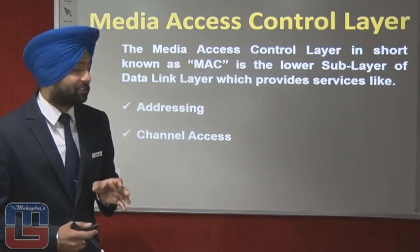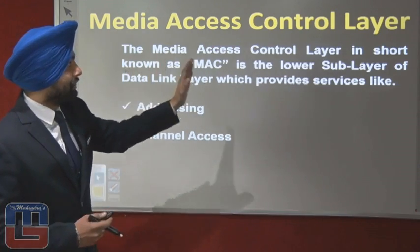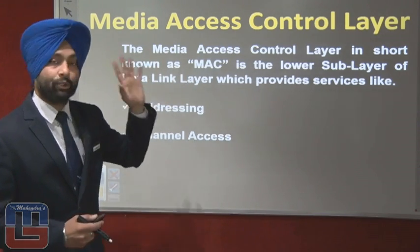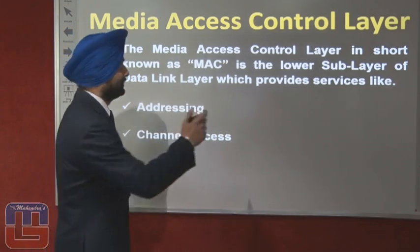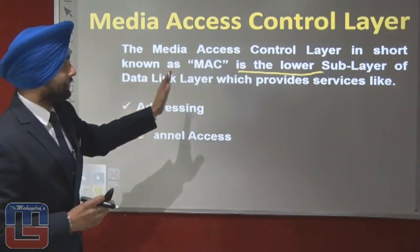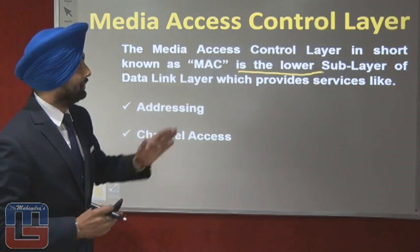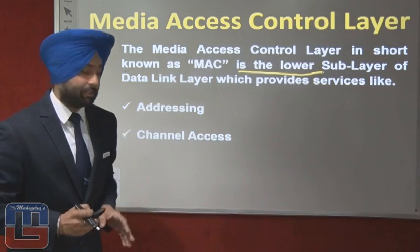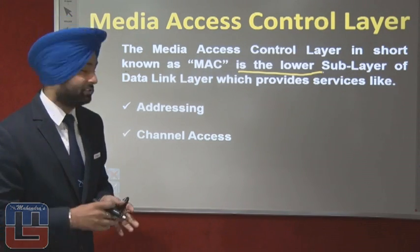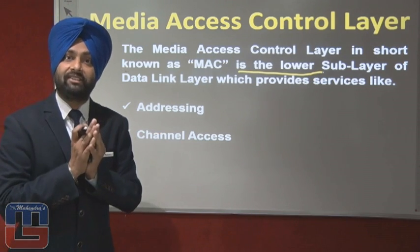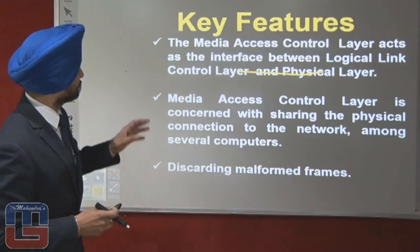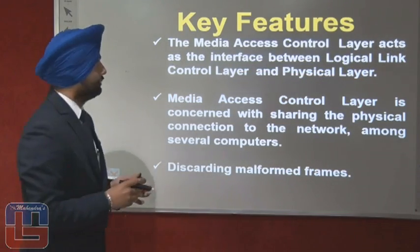The Media Access Control layer, in short known as MAC, is the lower sub-layer of the Data Link Layer — the second layer of the OSI model. It provides services like addressing, which refers to the destination address, and channel access, which refers to multiple devices using the same source or medium.